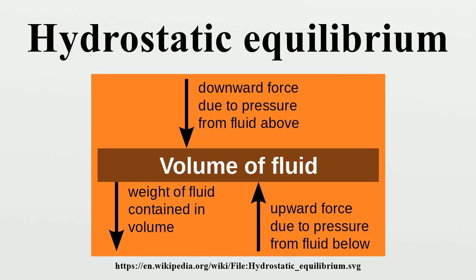Dividing by A: P_top minus P_bottom is a change in pressure, and H is the height of the volume element, a change in the distance above the ground. By saying these changes are infinitesimally small, the equation can be written in differential form. Density changes with pressure and gravity changes with height, so the equation follows accordingly.